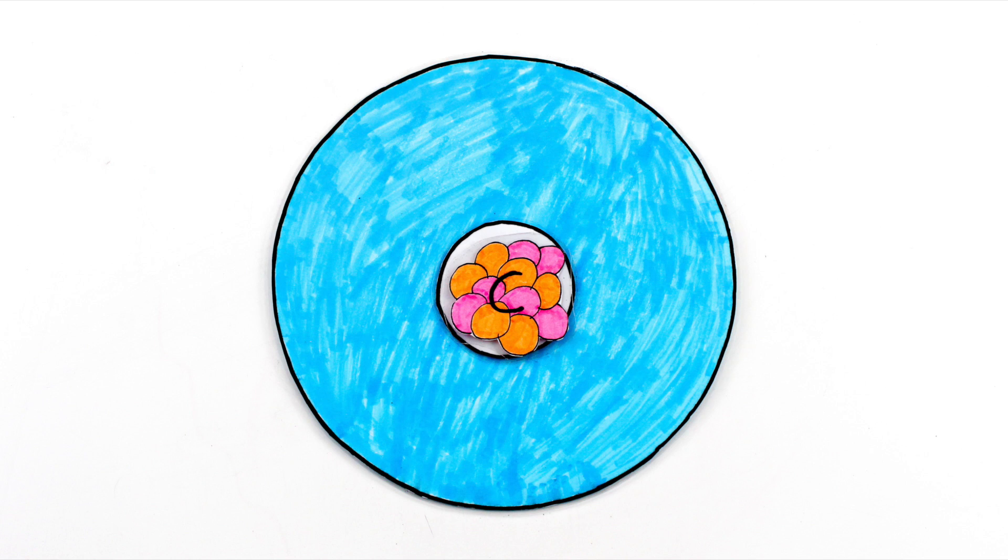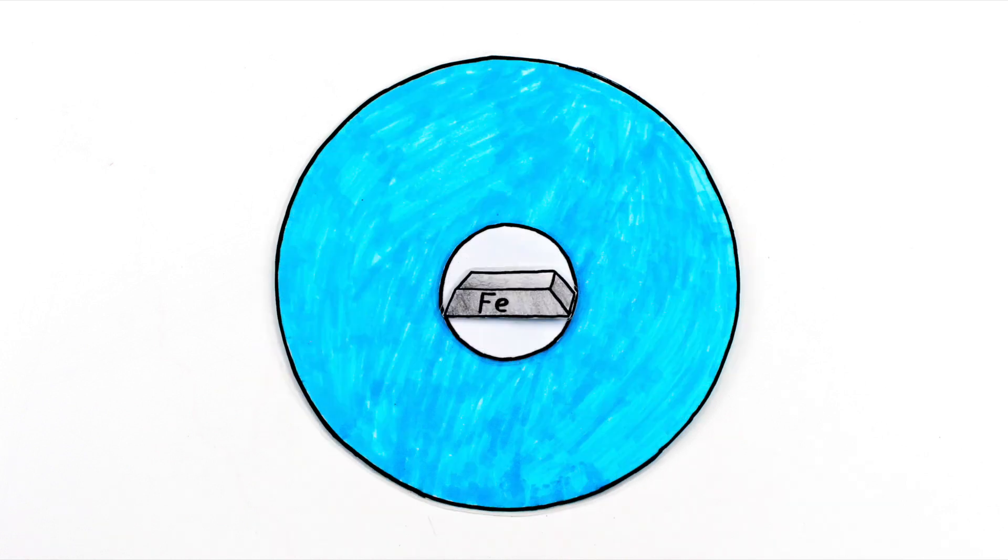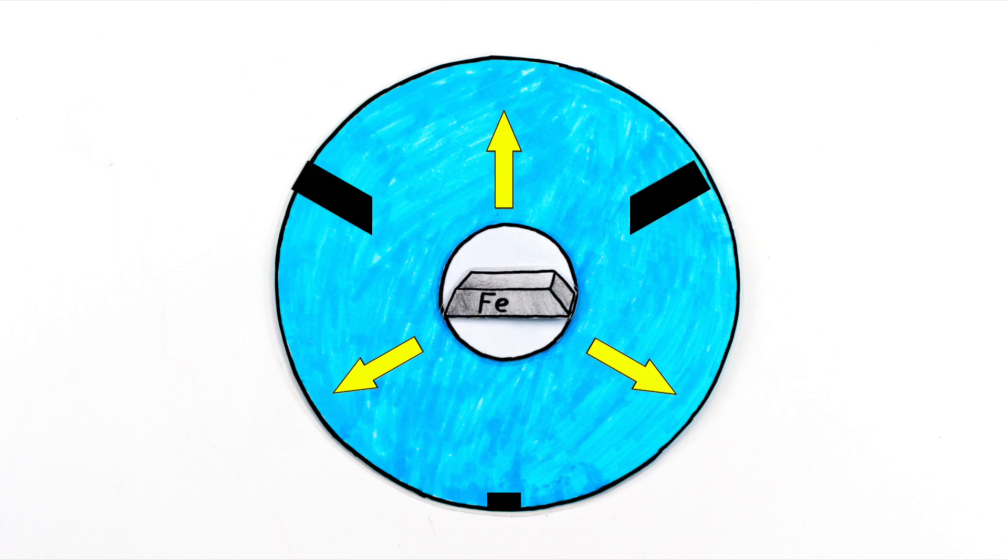Nuclear fusion is no longer energy efficient once it reaches iron, so when the core builds up enough of it, there's not enough outward radiation pressure to resist the force of gravity. The star begins to collapse.